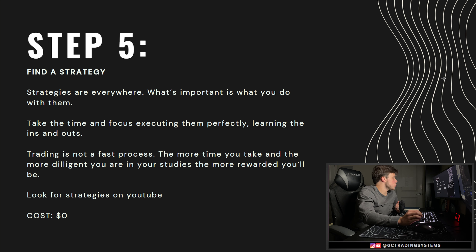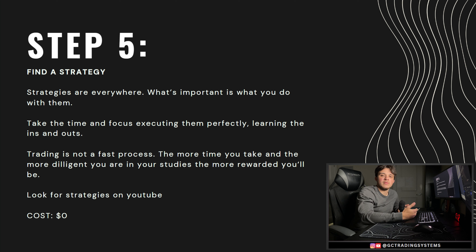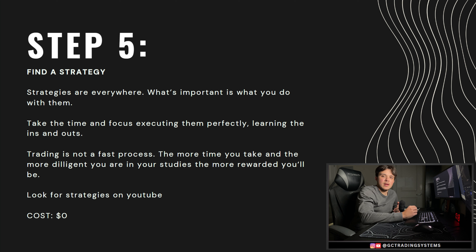Number five: find a strategy. Strategies are absolutely everywhere, but what is truly important is what you do with them. You want to take the time and focus on executing them perfectly and learning the ins and outs. I see so many traders get shiny object syndrome and skip from strategy to strategy without giving the current strategy time to prove itself. If it has two or three losers in a row, that might just be the probabilities hitting, but some traders just can't handle that. You just need to choose a strategy, stick with it. Even if the strategy ends up being bad long-term, at least you've taught yourself the ability to stick with something and learn how to execute it perfectly.